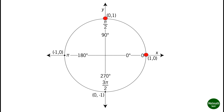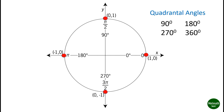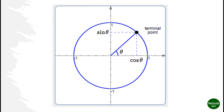Using this figure we can determine the exact values of the circular functions of quadrantal angles. If the terminal side of an angle in standard position coincides with one of the axes, such as 90 degrees, 180 degrees, 270 degrees, or 360 degrees, it is called a quadrantal angle.